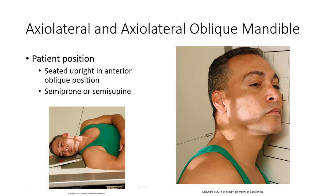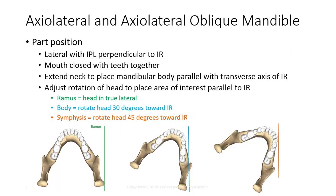The axiolateral and axiolateral oblique mandible have variable positioning criteria based on the portion of the mandible that needs to be visualized. Most routines include a general survey view, but keep in mind the area of interest and consult a radiologist to determine which positioning option or options to utilize. The patient should be seated upright with an anterior oblique position; they may also be semi-prone or semi-supine. Start with the mandible lateral with IPL perpendicular to the IR, keeping the mouth closed with teeth together. Extend the neck to place the mandibular body parallel with the transverse axis of the IR.